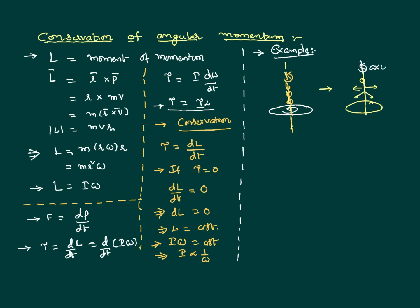Now if the boy changes his posture on the same rotating table so that his hands and legs are quite away from the axis of rotation, the distance of the particles from the axis increases. As the distance increases, the moment of inertia mr² increases. Since there is no external torque acting on the system, his angular velocity decreases. So if the boy wants to slow down, he simply stretches his body away from the axis, increasing moment of inertia and hence decreasing angular velocity.